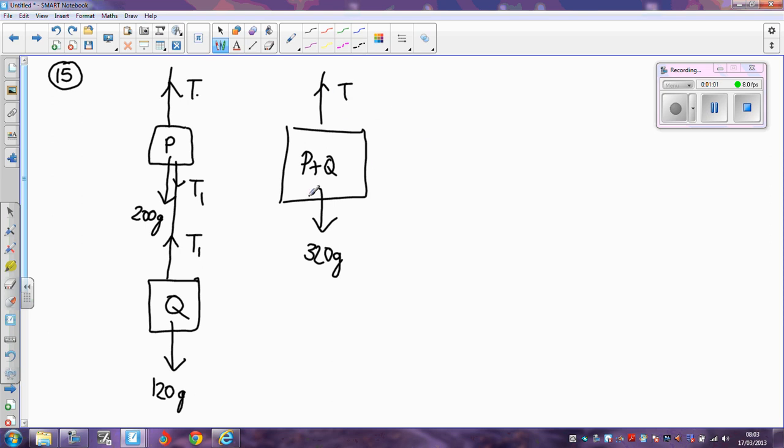First of all, when you've got the thing resting in equilibrium, that means T must equal 320g. If we work that out, 320g comes out as 3136, or to three significant figures, remembering g isn't that accurate, 3140 Newtons.